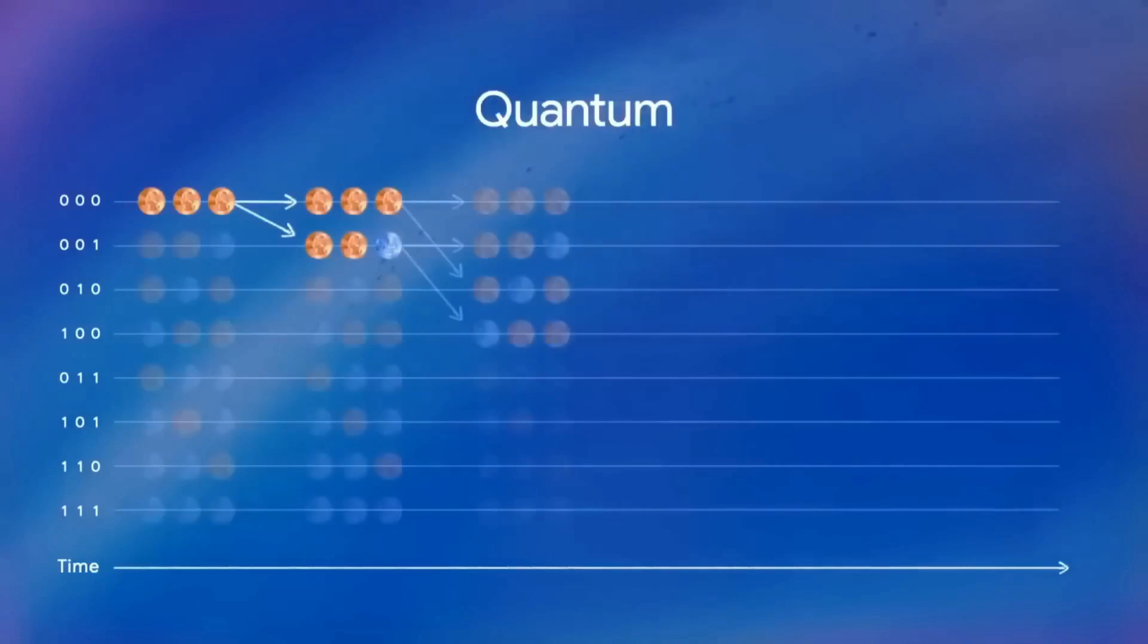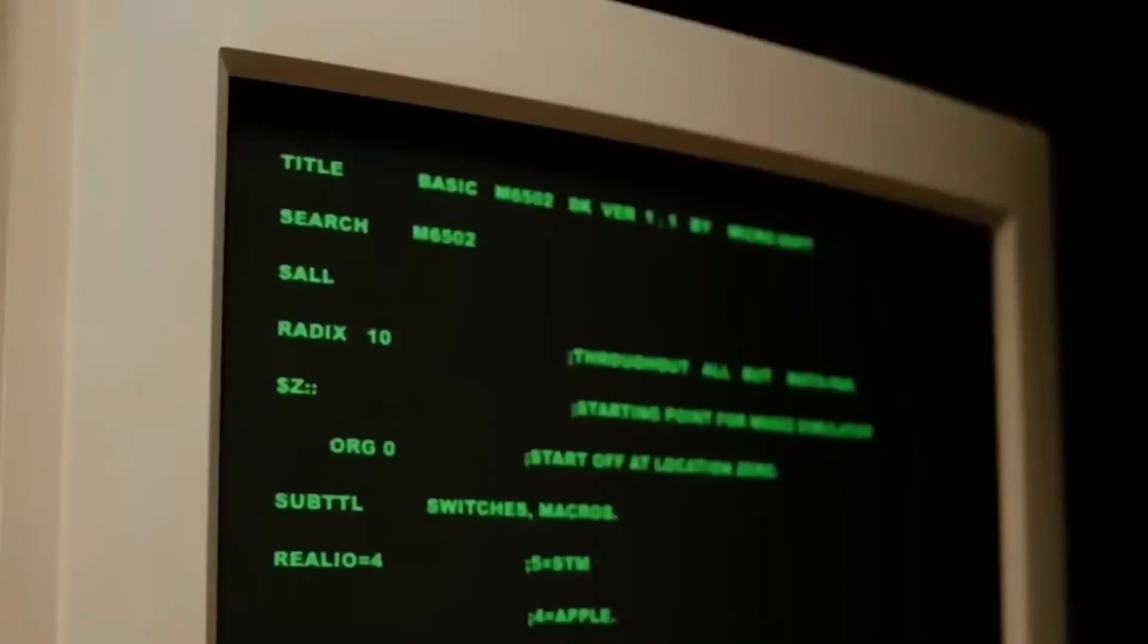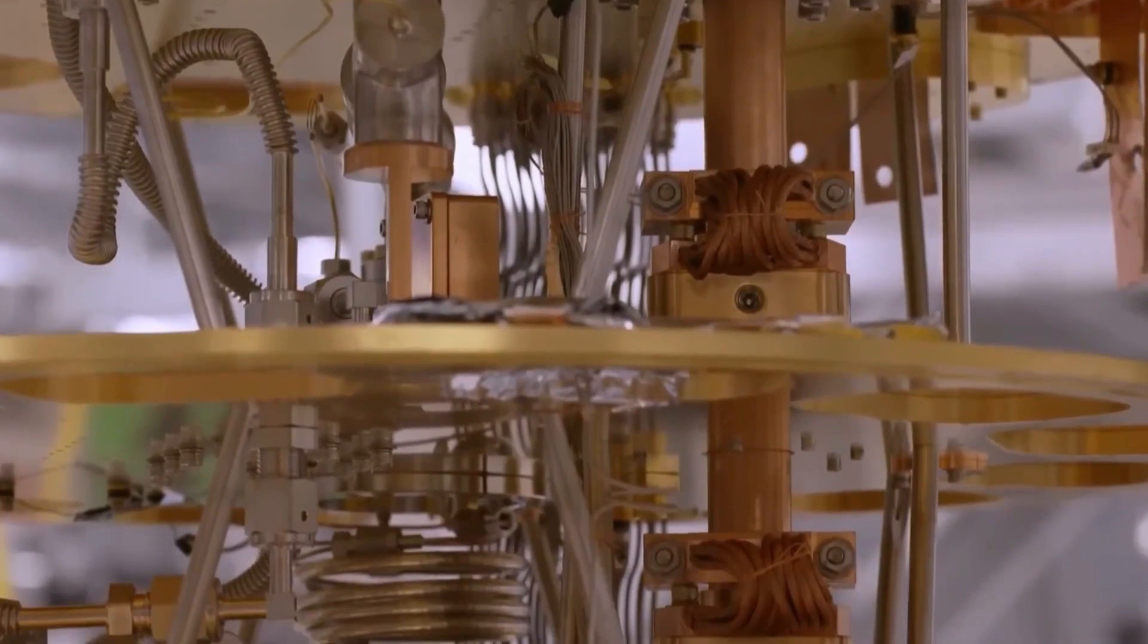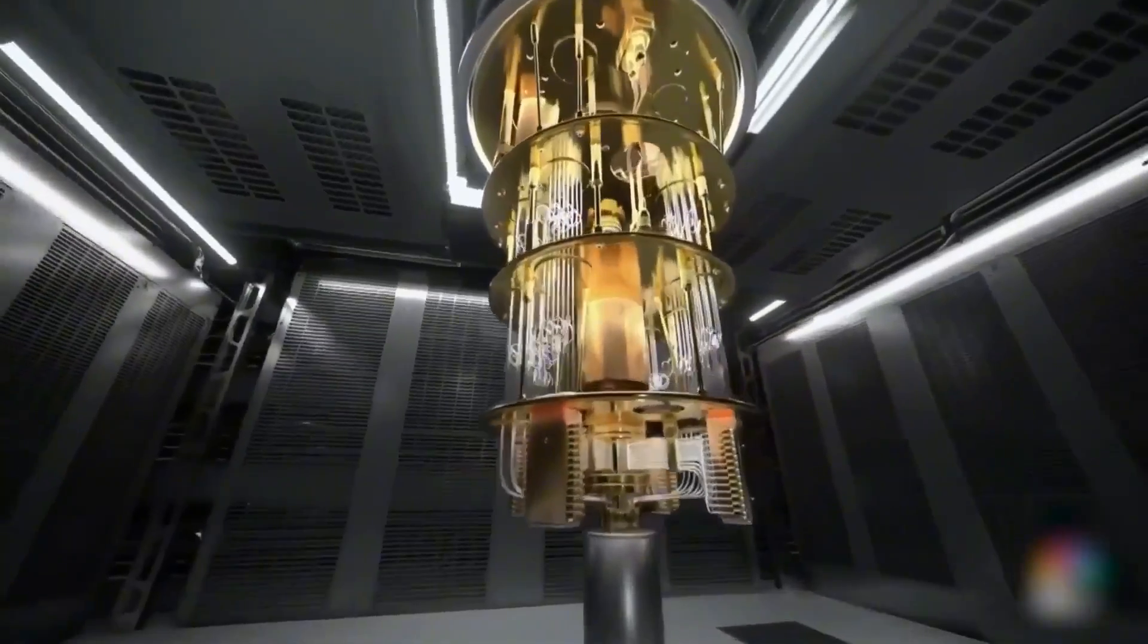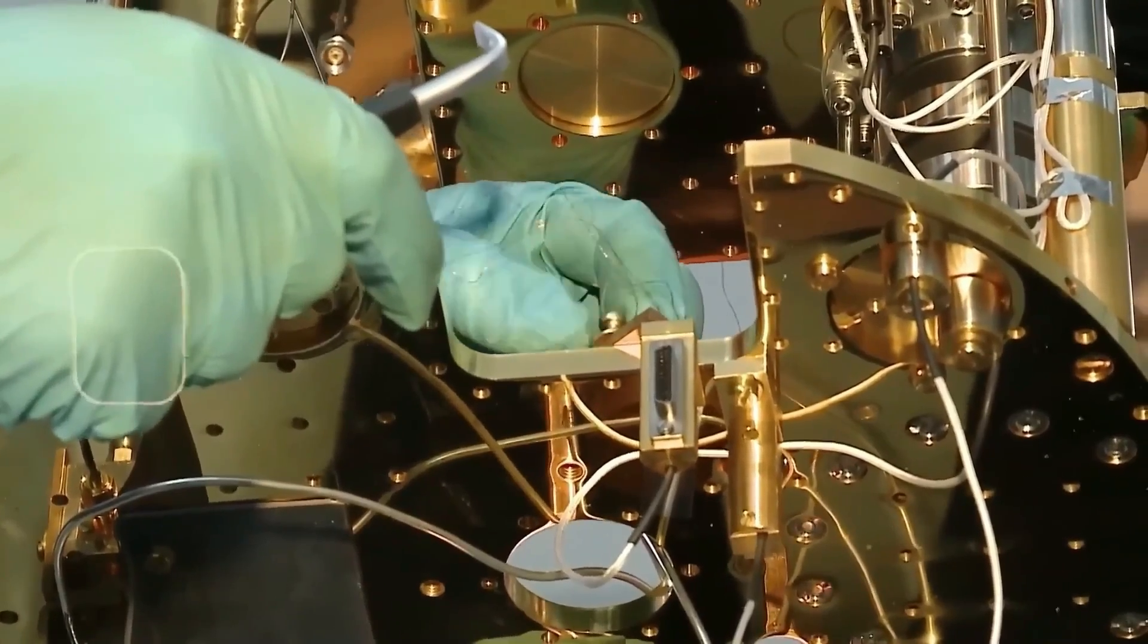Turing derived an uncomputable constant, Chaitin's Omega, the probability that a random program will eventually halt. It's a real number, it exists, but it can never be fully known. Now, fast forward to 2025. Quantum computers promise to break boundaries classical machines never could.